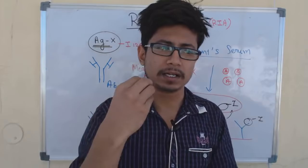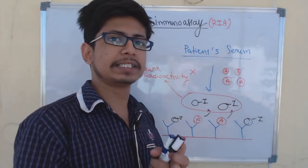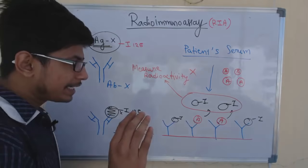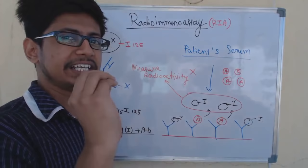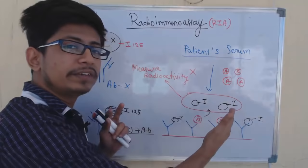Now, if we find a specific antigen, we can link that antigen to a disease and detect that disease in the person's body. So let's say we want to detect a specific antigen in a patient's serum — that is called antigen X.